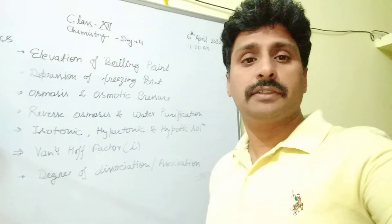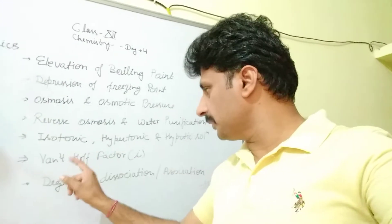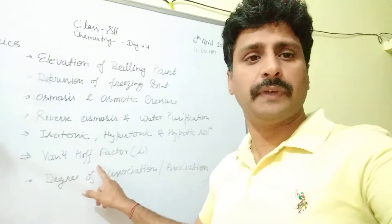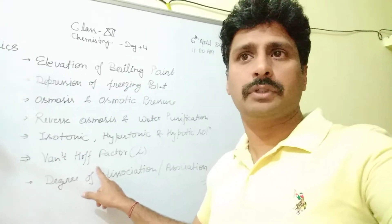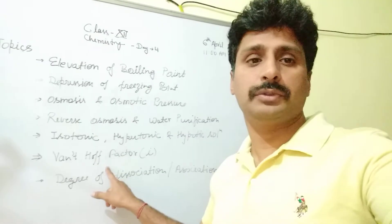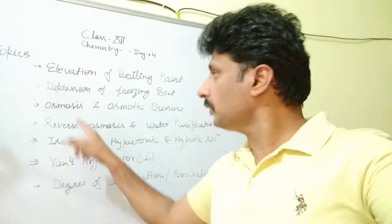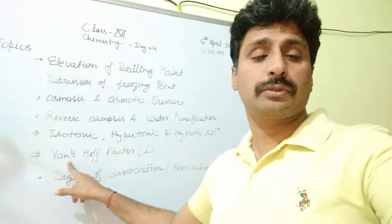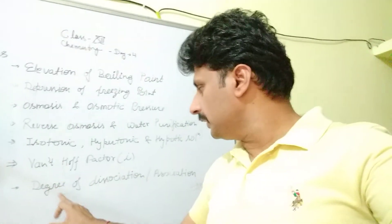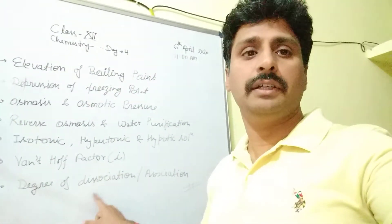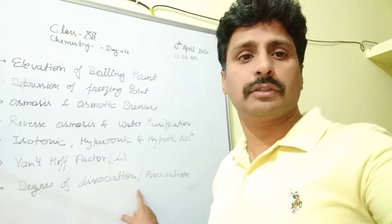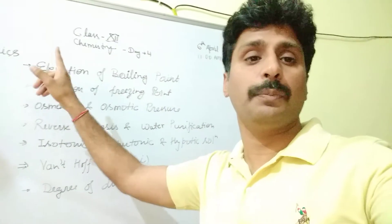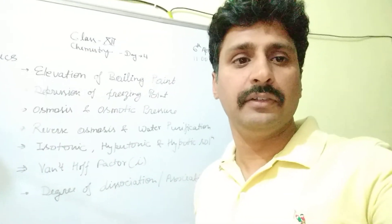In this unit there is a special topic: the Van't Hoff factor. The Van't Hoff factor is used for solutions having ionic solutes, so we will discuss all these properties with the help of the Van't Hoff factor. The last topic of this chapter is the degree of dissociation and degree of association of solute molecules. We will discuss these topics one by one in the second video. Thank you.